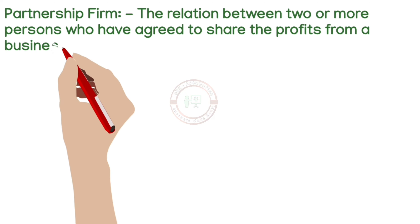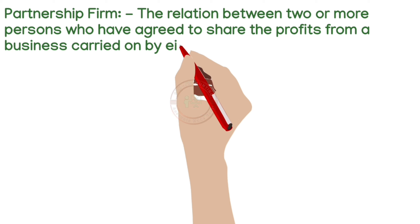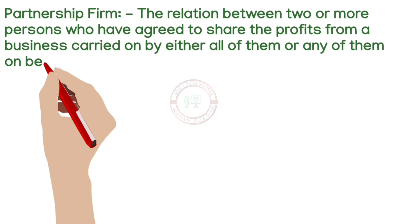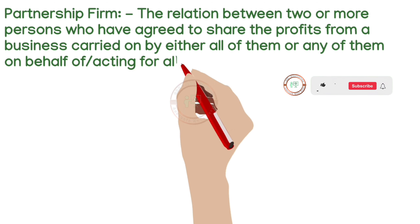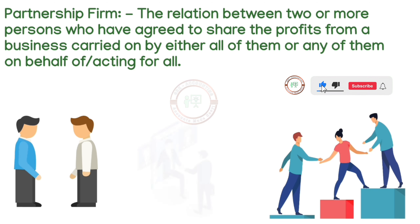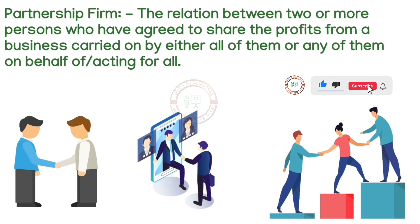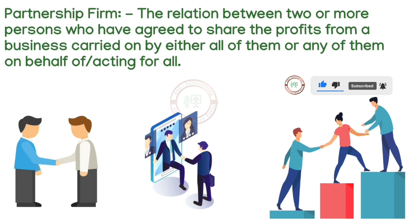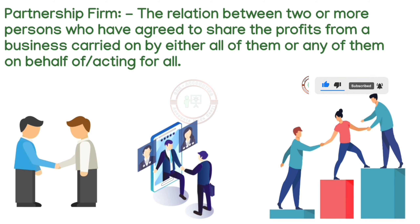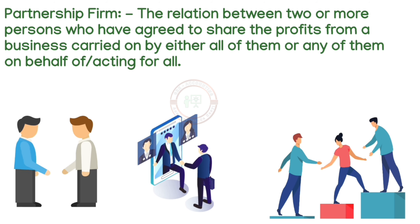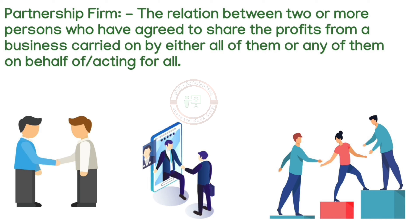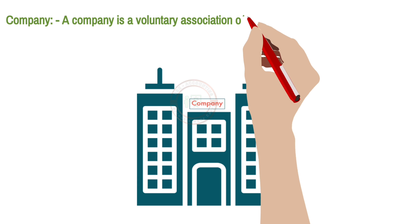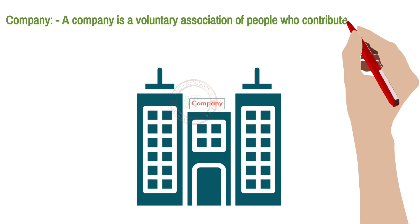In a partnership, the business will be carried on by all of them or any person acting on behalf of them. Examples include GM Kapadia and RK & Co. Now the next one is company — a company is a voluntary association of people who contribute money for a common purpose or goal.